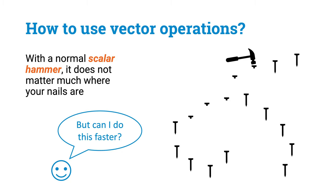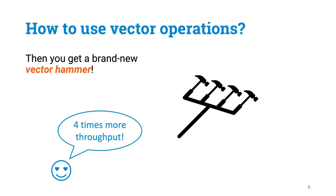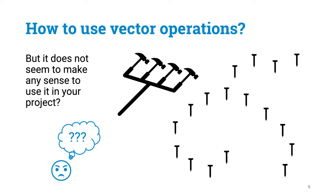Can we do it faster with some parallelism? You go to the PPC hardware store and find a brand new vector hammer. The salesperson promised you could drive four nails with one swing — four times more throughput. But then you get back home, look at your project, look at the vector hammer, and you don't see any place where you would have four nails in a row. So was the salesperson cheating you? Actually, the tool is just fine — your project is wrong.